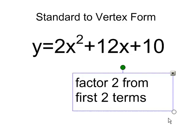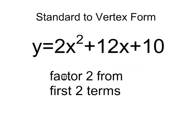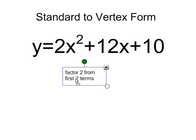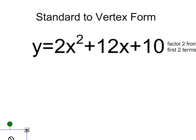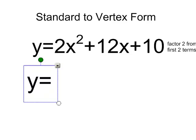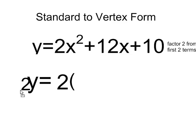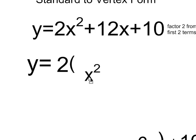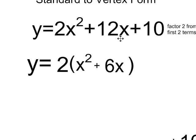So the first thing we're going to do is factor a 2 from the first two terms of this trinomial. When we do that, it becomes y equals 2. I'm taking a 2 out of both terms. So 2x squared divided by 2 is x squared. 12x divided by 2 is 6x. So there, I have an equivalent form for the first two terms. I've just factored a 2 out, and the 10 still remains.